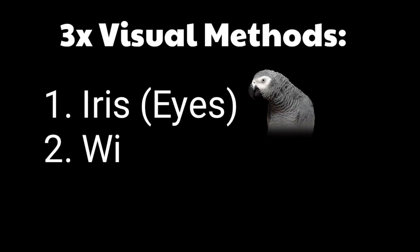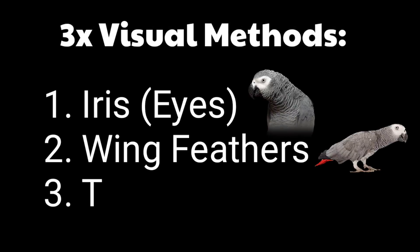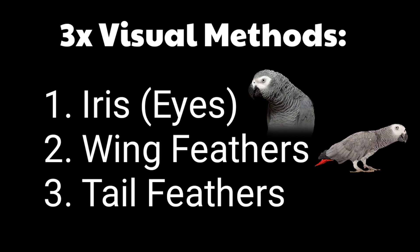One, seeing through the eyes. Second, seeing underneath the wings, wing feather. And thirdly, at the tail feather.